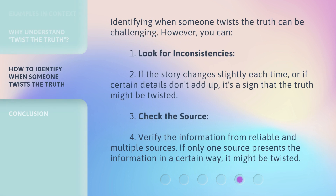Identifying when someone twists the truth can be challenging. However, you can look for inconsistencies — if the story changes slightly each time, or if certain details don't add up, it's a sign that the truth might be twisted. You should also check the source: verify the information from reliable and multiple sources. If only one source presents the information in a certain way, it might be twisted.